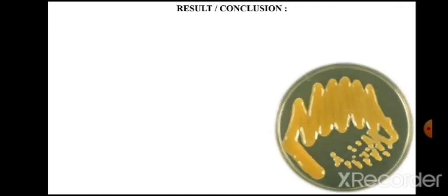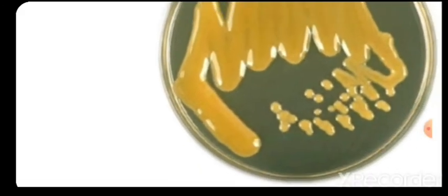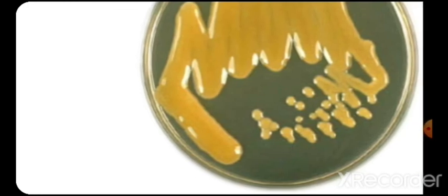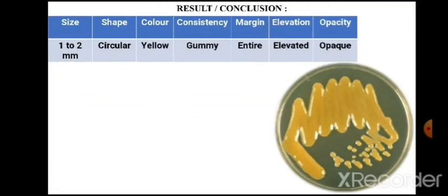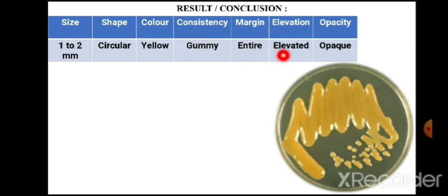The results: the types of colonies are glossy, gummy, and big colonies with yellow color. Record the colony characteristics — these colonies are big, as large as 1–2 mm, circular in shape, yellow colored, gummy or sticky, with entire margins, elevated and cupoid.